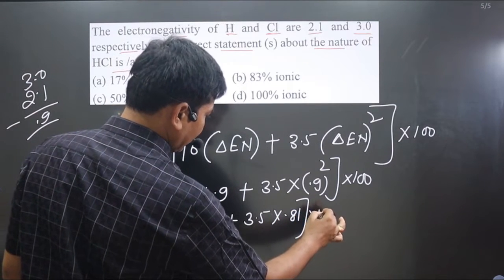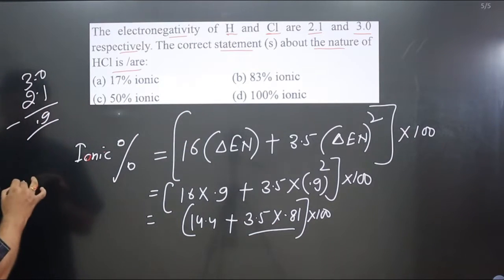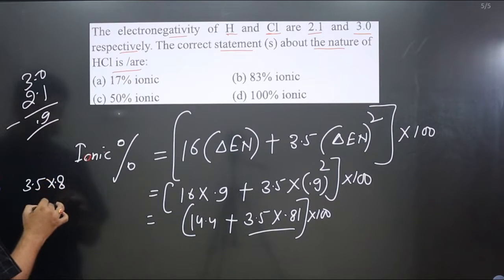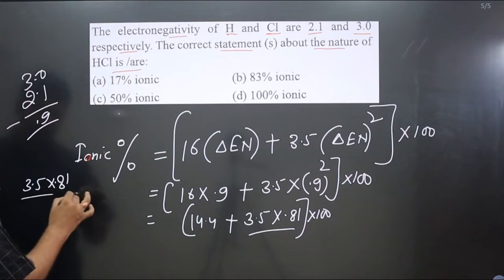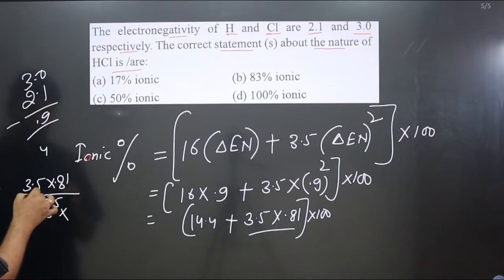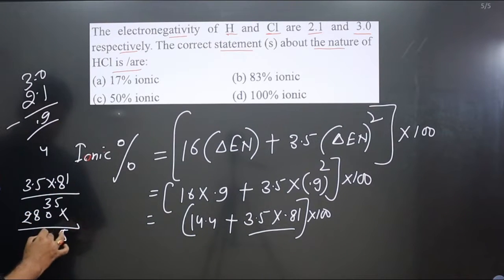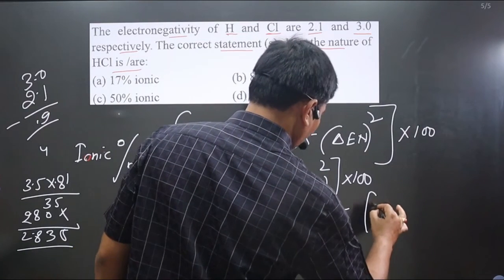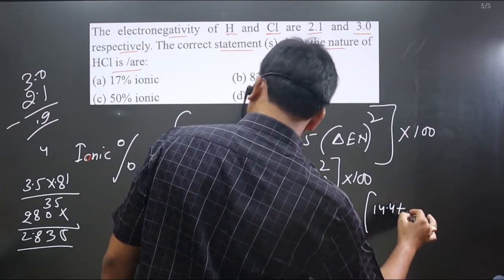We can simplify: 3.5 multiplied by 0.81. That's 3.5 times 8: 5 times 8 is 40, giving 40 and 4 is 44; 3 times 8 is 24 plus 28. With the decimal three places, we get 2.8. So we have 14.4 plus 2.8.